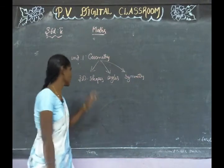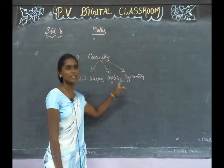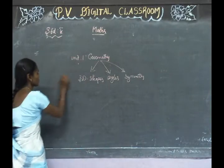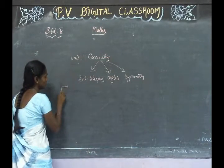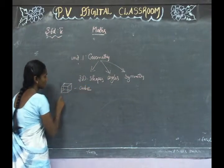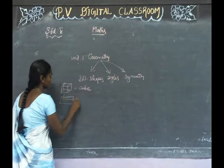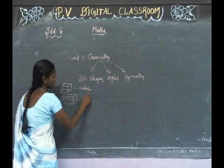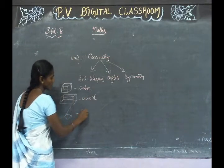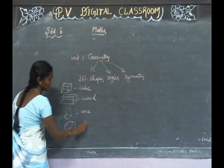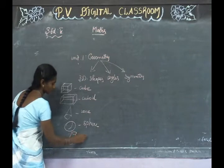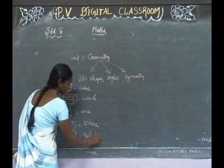Geometry. Let's take a look at 3D shapes. Students, we have 3D shapes. You can know the shapes on the 3D shapes. What are you going to learn? Cube, then the next one — cuboid, cone, sphere, cylinder.